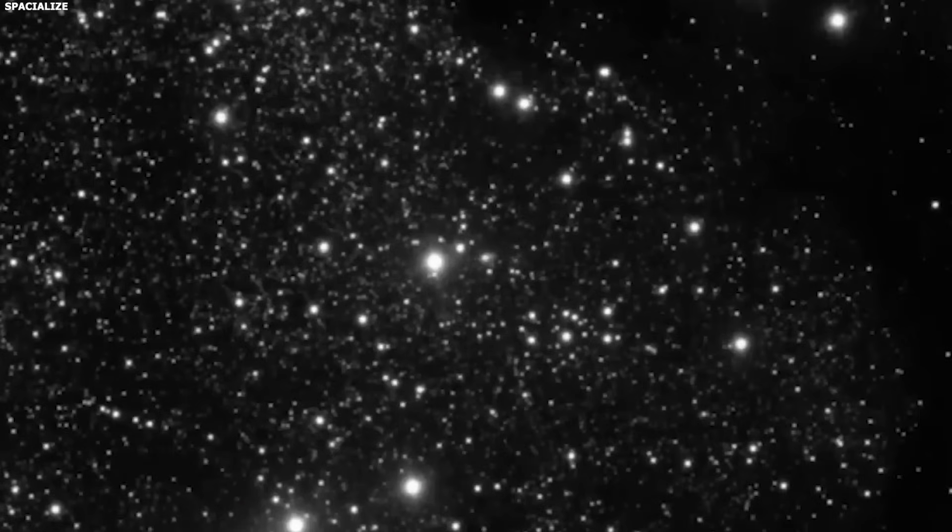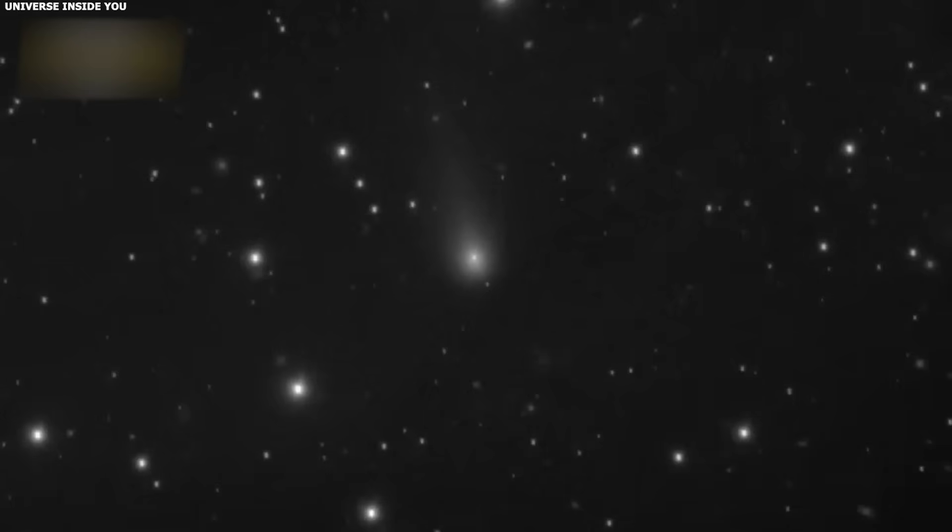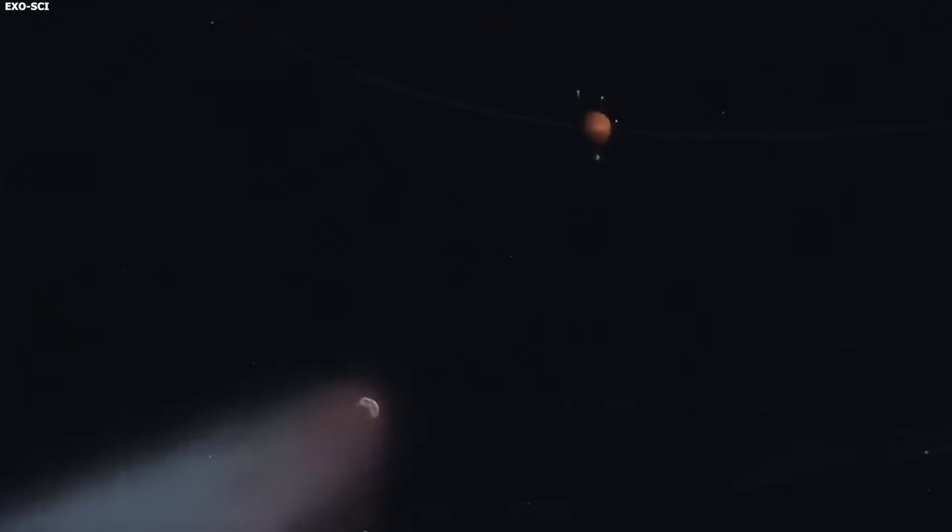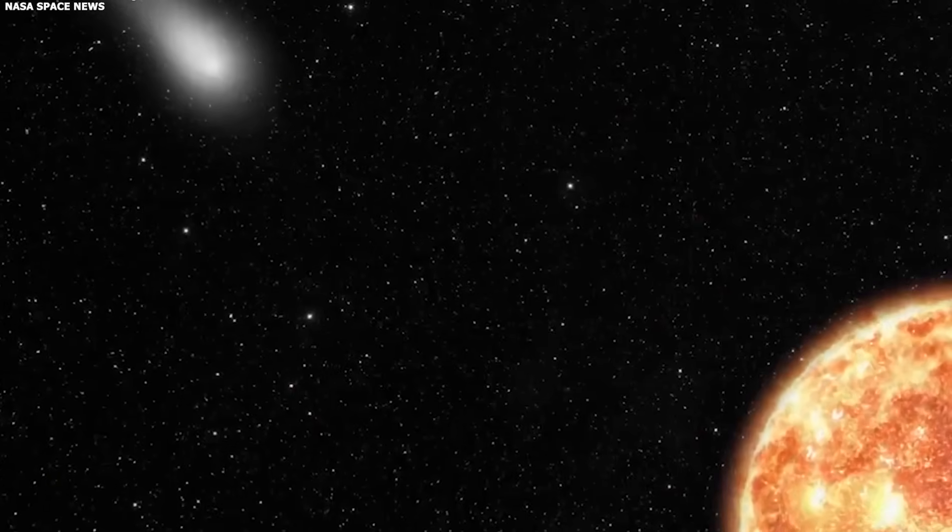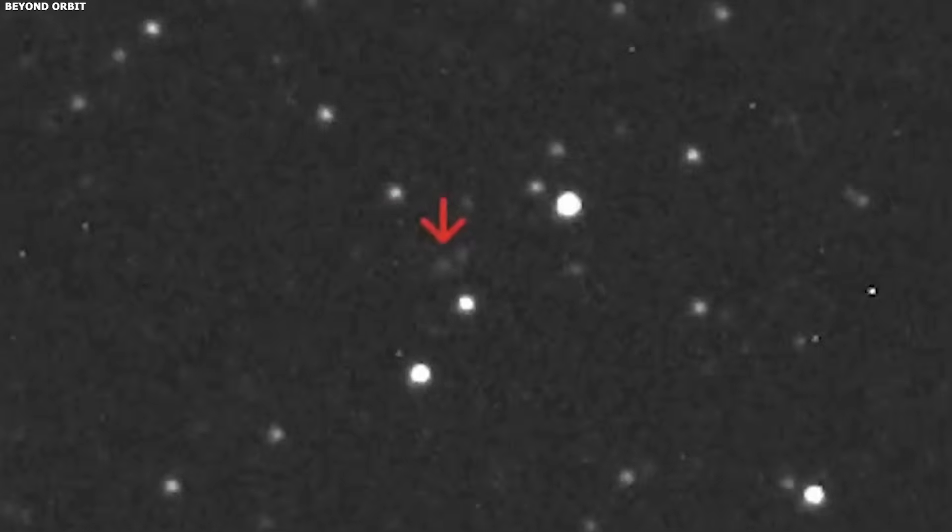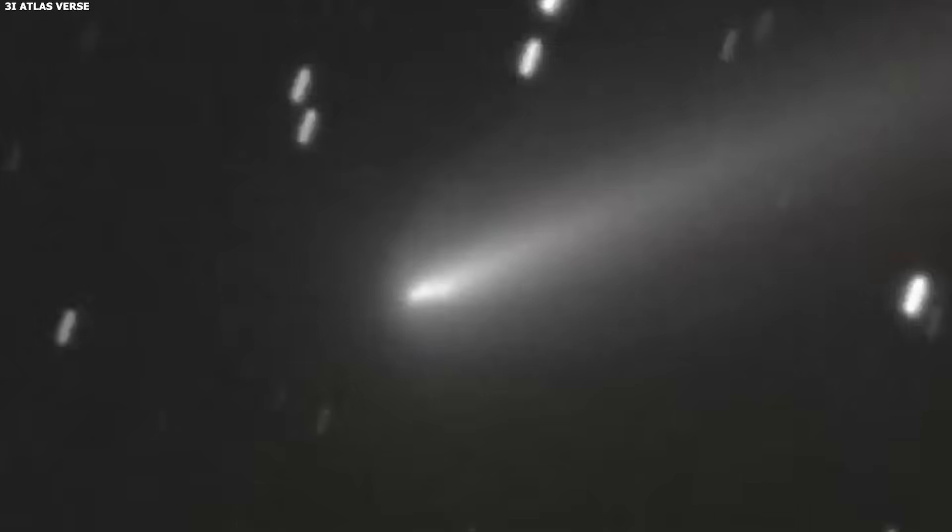Then solar wind comes into play. Solar wind is a stream of charged particles constantly flowing out from the sun. It moves at about 400 kilometers per second. When it hits the gas and dust around a comet, it pushes that material away from the sun. That's what creates the tail. Solar radiation pressure does the same thing. Sunlight itself has momentum. When photons hit dust particles, they push them. Not very hard, but over time, it's enough to create a long tail stretching away from the sun.